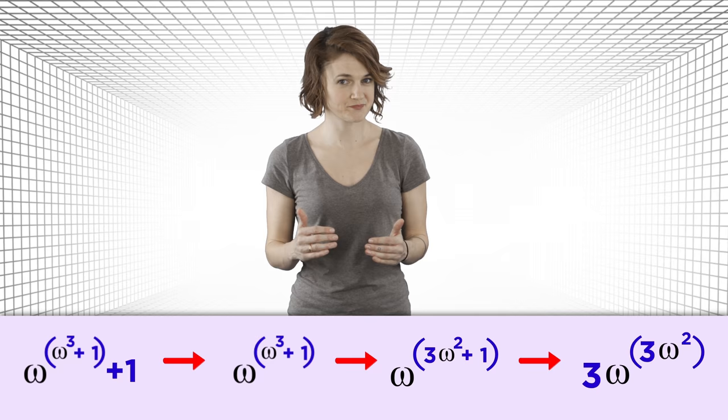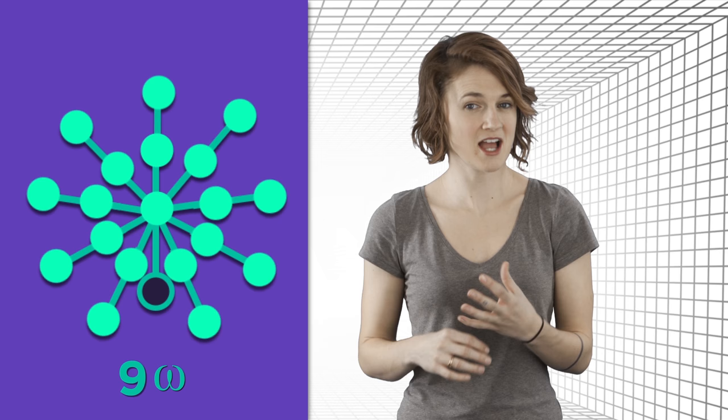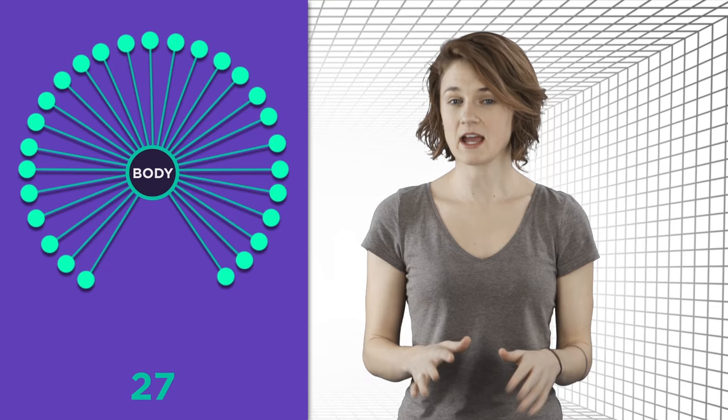Let's see one more example. The line of three heads stacked on top of each other. The starting hydra has ordinal omega to the omega. After one chop, it's omega cubed. By the sixth step, it's nine times omega. And by the fifteenth step, it's 27. Finally, after 41 steps, the hydra is just its body. So it is assigned the ordinal zero. And that's the big point.